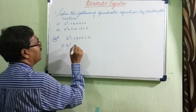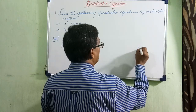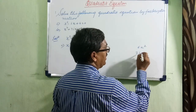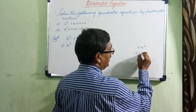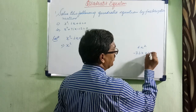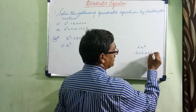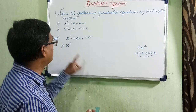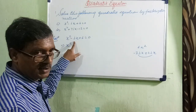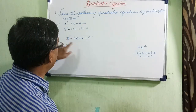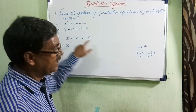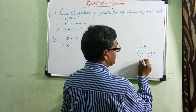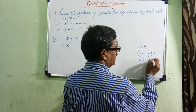We have x squared. Now, can you write the middle term as minus 3ix plus 2ix? Because when you take them as a sum, we will get minus ix. But when you multiply, you should get the product of the first and the last term — which gives us minus 6x squared into i squared.